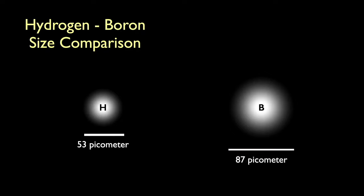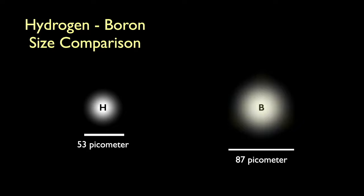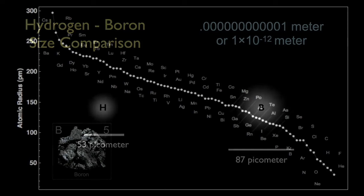If we compare the size of the boron atom to that of hydrogen, we'd see something like this. Boron is just a bit bigger than hydrogen, by about 64%. Notice the three electrons in the outer shell — there's still room for an additional five. By the way, a picometer is a trillionth of a meter. Atoms are mind-bogglingly small.